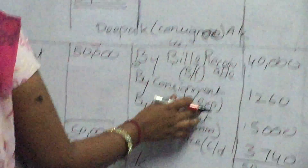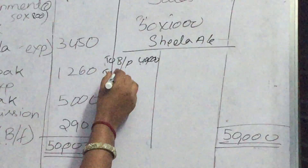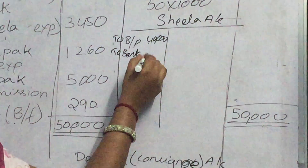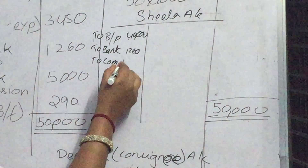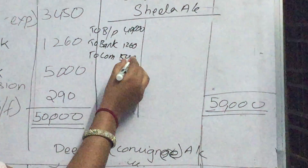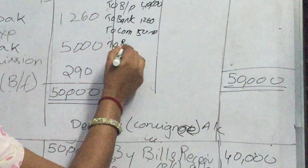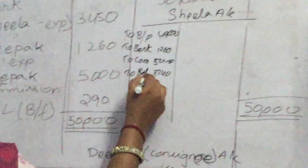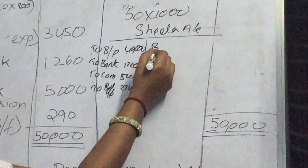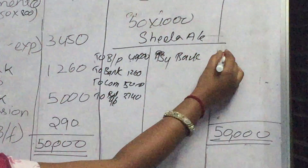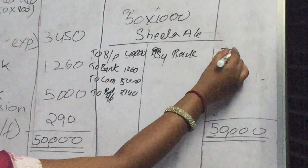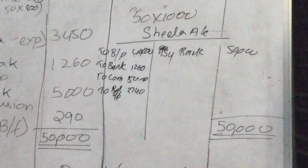Next, consignment expenses is there — to bank you should write — just only changing the names — 1,260. Next, buy consignment commission — you should write to commission as it is named — same, 5,000. Same balance you should bring down — balance carried down: 3,740. Next, debit side financials transfer to credit side — by bank. How much is the sales? 50,000. Total for that side — 50,000.